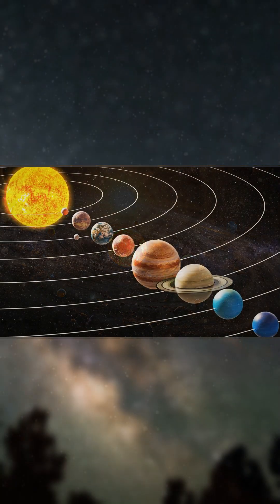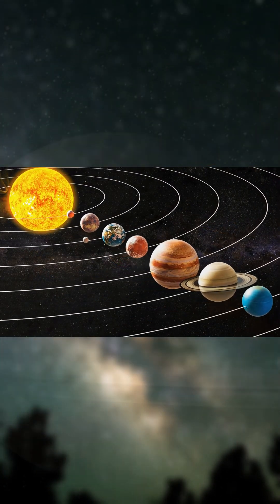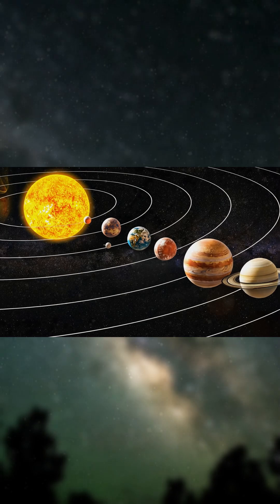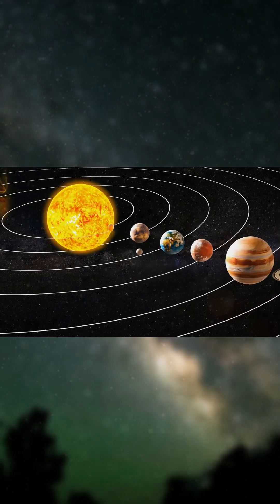This alignment occurs because the planets orbit the sun along the same plane, making their paths appear to converge from Earth's perspective.